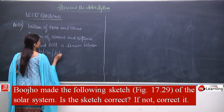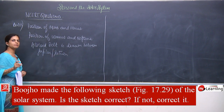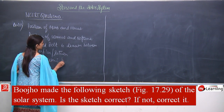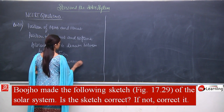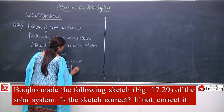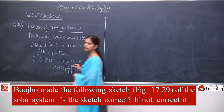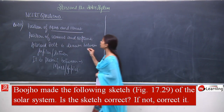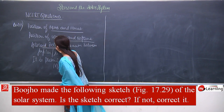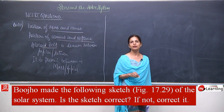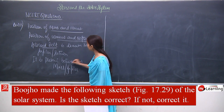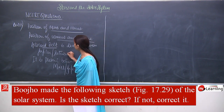The position of Uranus and Neptune is also not correct. And the asteroid belt is also not drawn correctly. Here the asteroid belt is drawn between Jupiter and Saturn, but actually it is present between Mars and Jupiter.